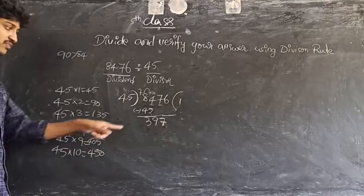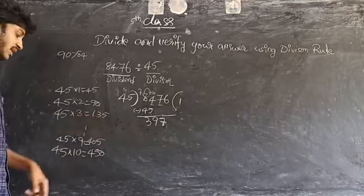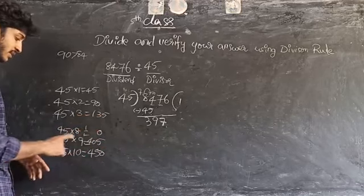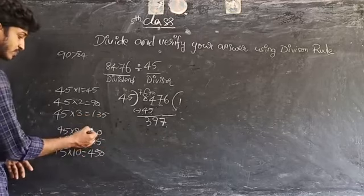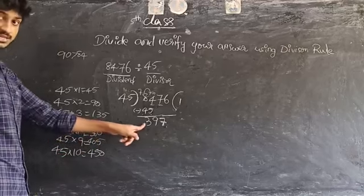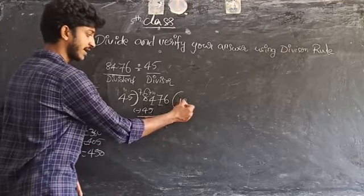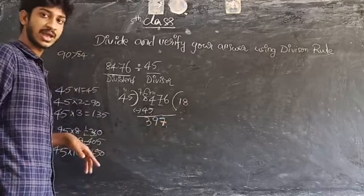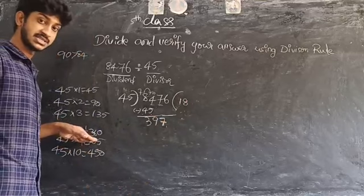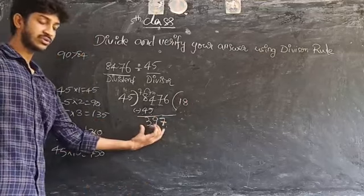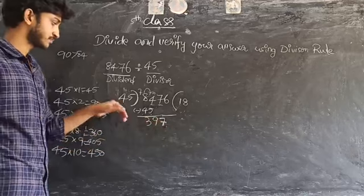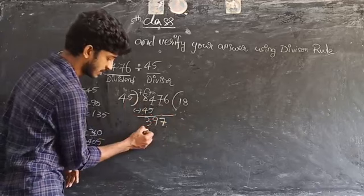Now 45 into 9 is 405, and 405 is greater than 397. So I try 45 into 8: 8 times 5 is 40, 8 times 4 is 32, 32 plus 40 is 360. So 45 into 8 is 360. Since 360 is less than 397, I take 8 as the next digit of the quotient.